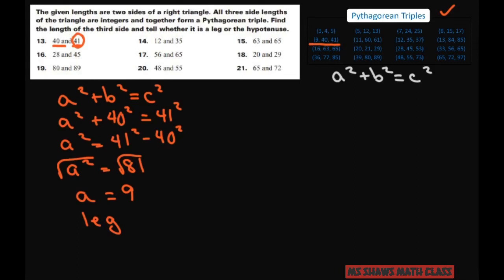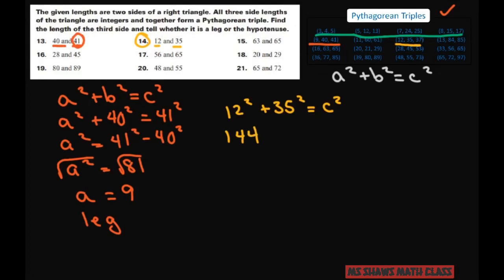The ones you really need to know are the top row here. Now let's look at number 14. These numbers are kind of far apart, so let's just do 12² + 35² = c². So you get 144 plus — 35 squared is 1,225.